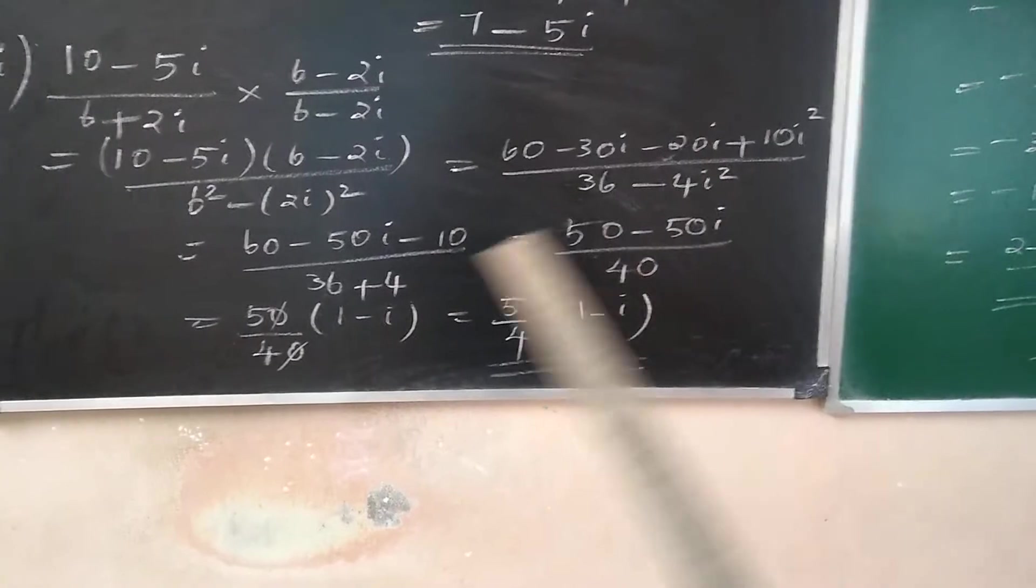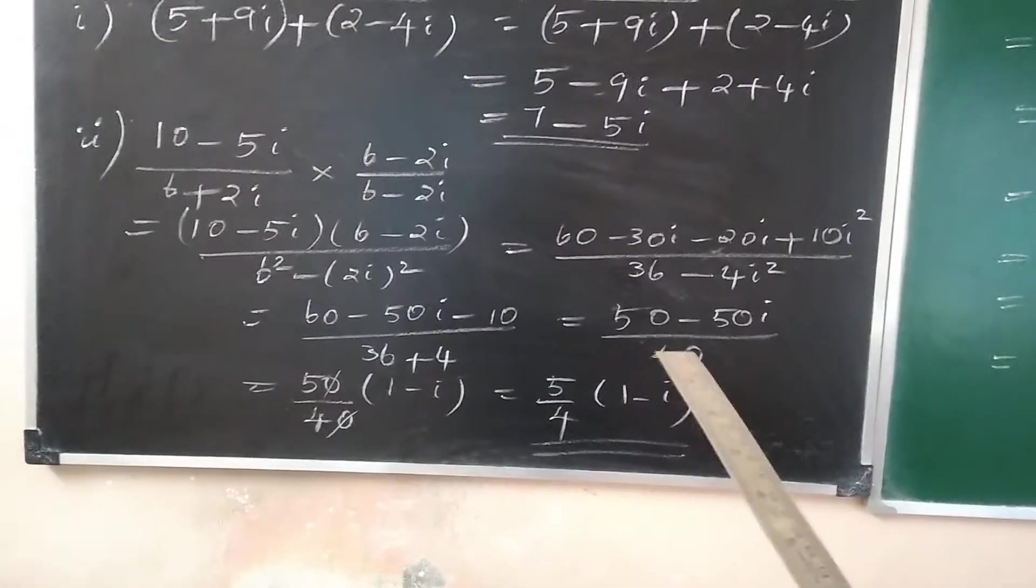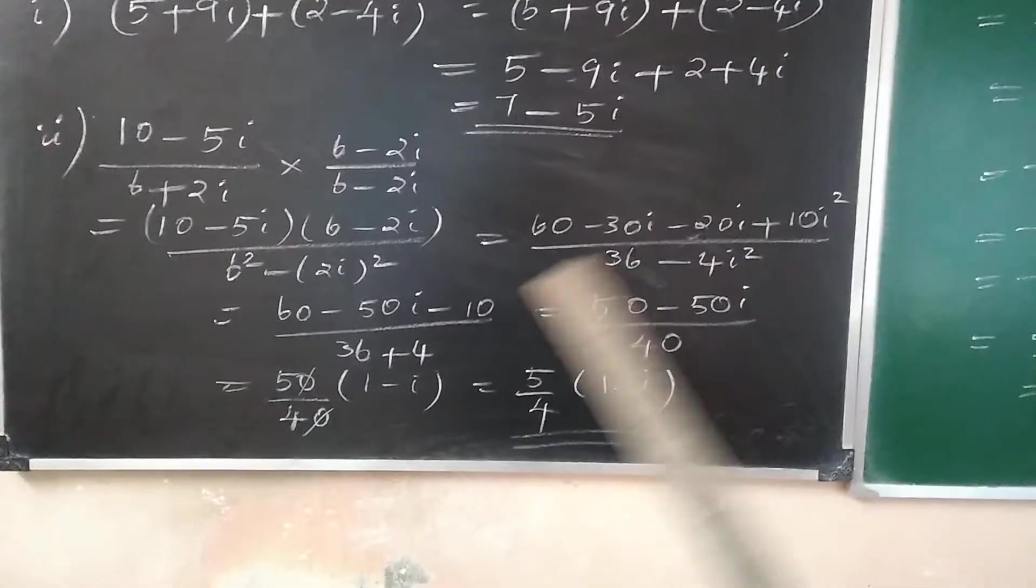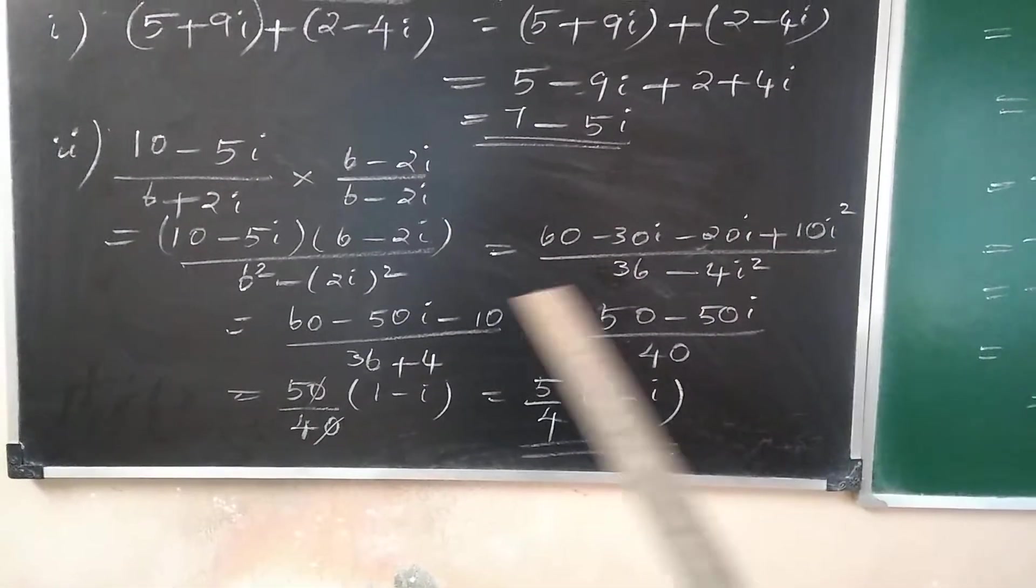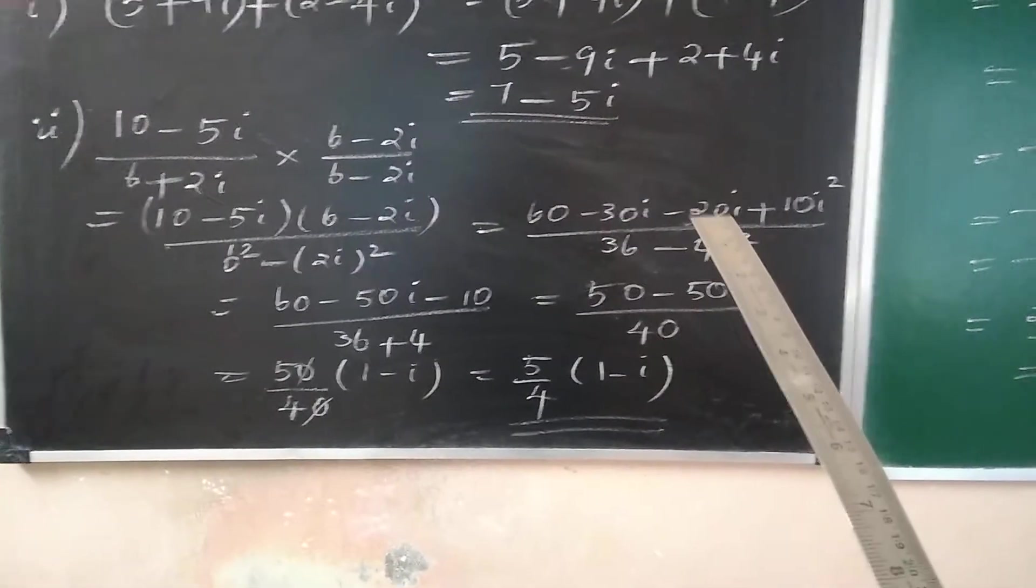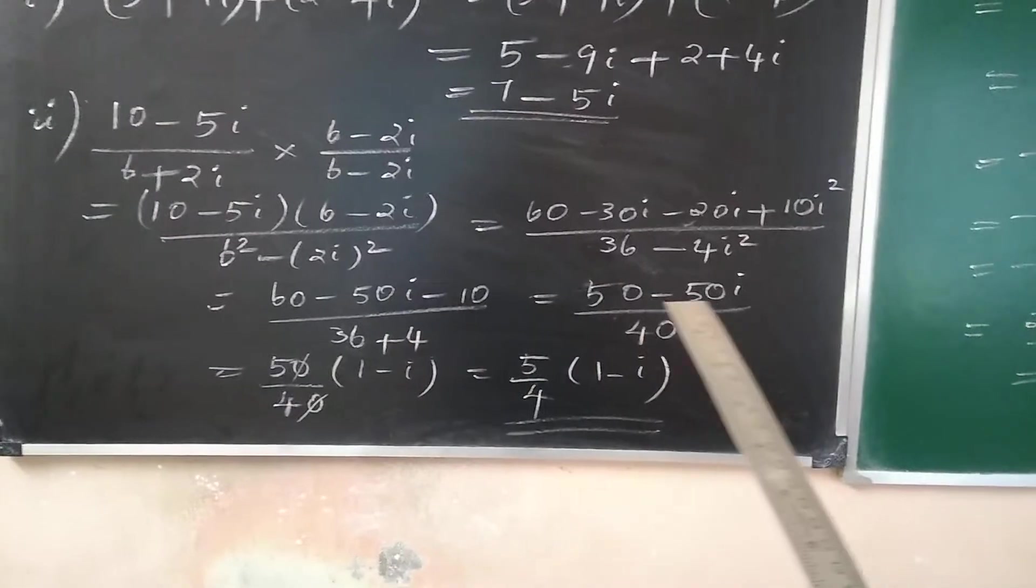36 minus 4i square become 36 plus 4 which means 40. And the numerator 60 minus 10i minus 10i square is minus 1. Therefore, the term becomes minus 10. 60 minus 10 becomes 50. Minus 30i minus 20i becomes minus 50i.